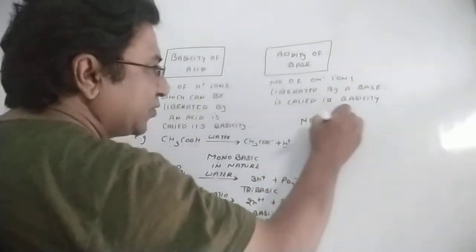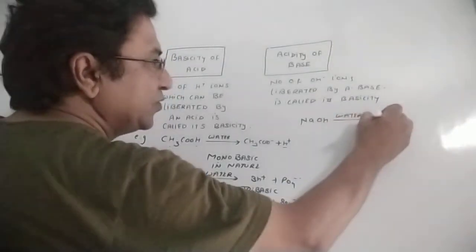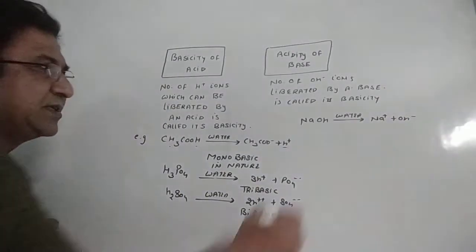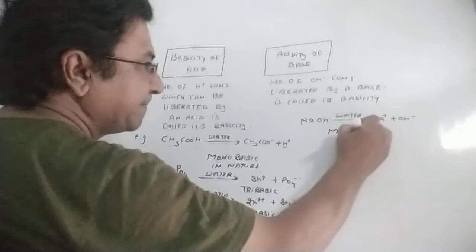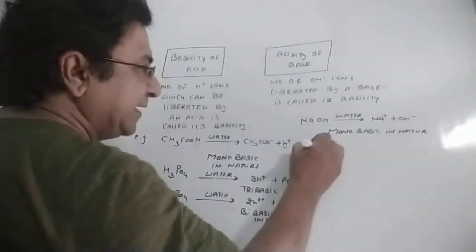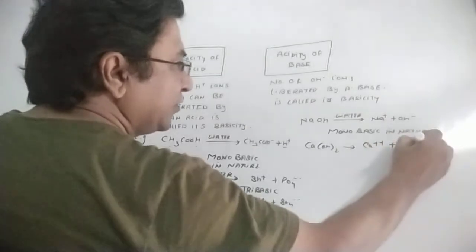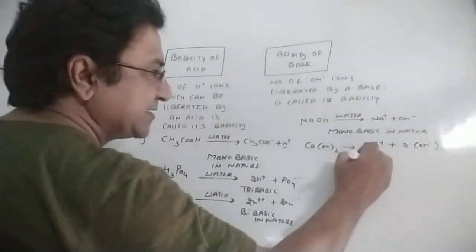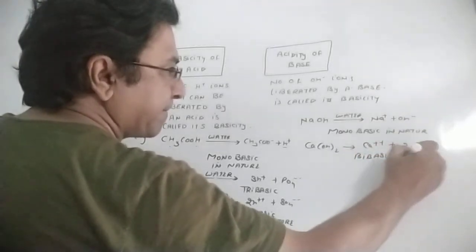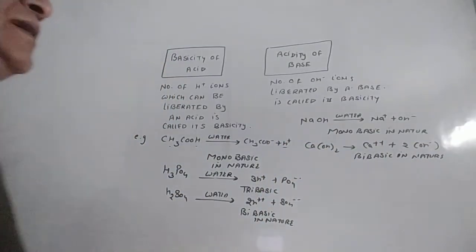For example, sodium hydroxide (NaOH) dissolved in water produces one hydroxyl ion, so it is mono acidic in nature. Calcium hydroxide (Ca(OH)2) dissolved in water produces two hydroxyl ions, so it is di acidic in nature.